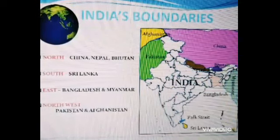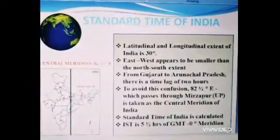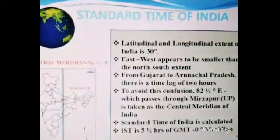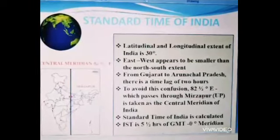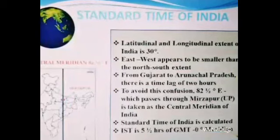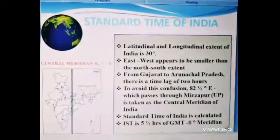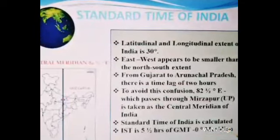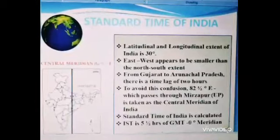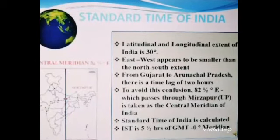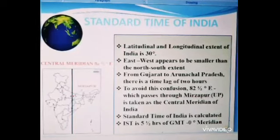India's standard meridian and Indian standard time: The latitudinal and longitudinal extent of India is about 30 degrees. Due to this fact, the east and west extent appears smaller than the north and south extent. From Gujarat to Arunachal Pradesh, there is a time lag of 2 hours. Hence, the time along the standard meridian of India, 82 degrees 30 minutes east, passing through Mirzapur in Uttar Pradesh, is taken as the standard time for the whole country, and is called Indian Standard Time.